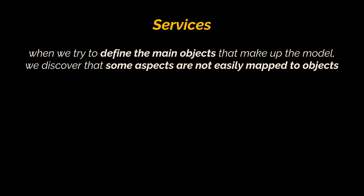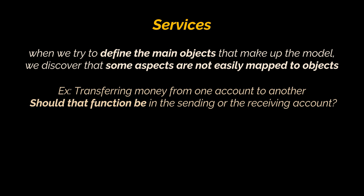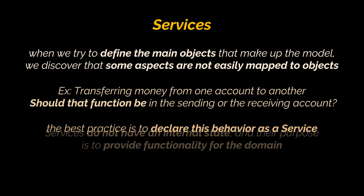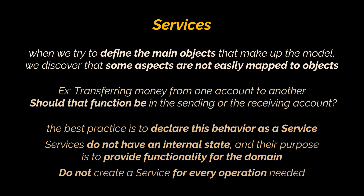Next we have services. When we analyze the domain and try to define the main objects that make up the model, we discover that some aspects of the domain are not easily mapped to objects. For example, transferring money from one account to another — should that function be in the sending account or the receiving account? It feels just as misplaced in either. When such a behavior is recognized in the domain, the best practice is to declare it as a service. Such an object does not have an internal state and its purpose is to simply provide functionality for the domain.